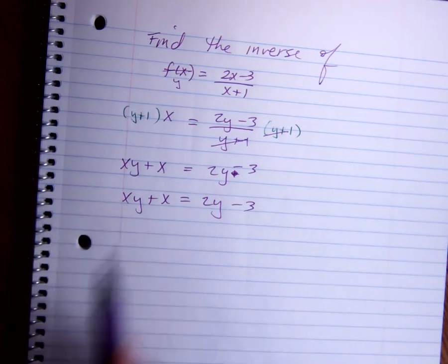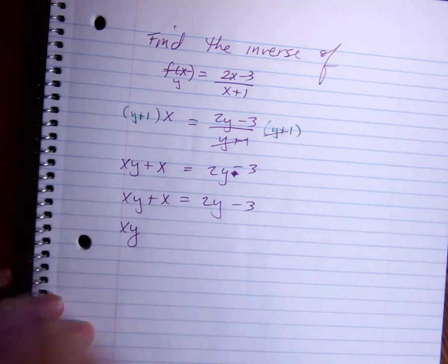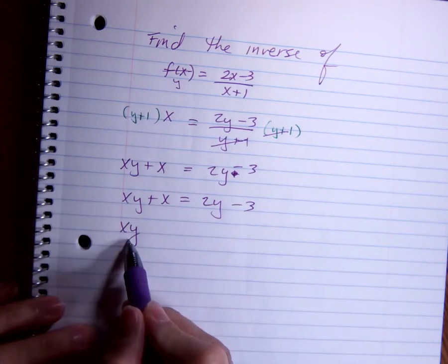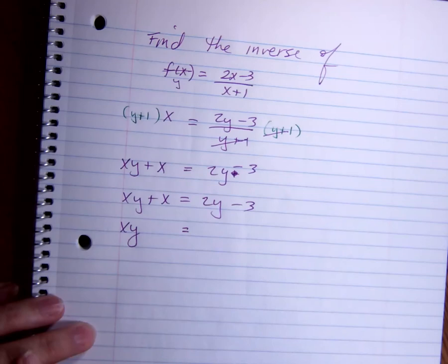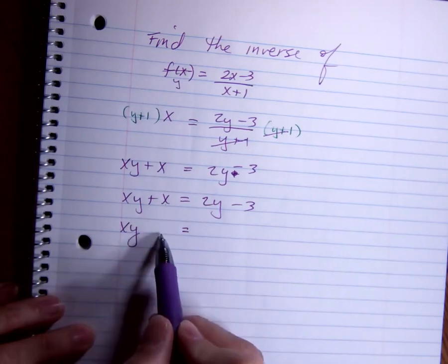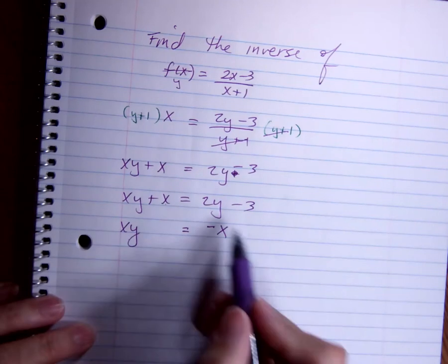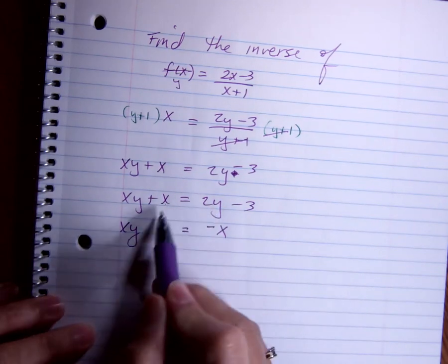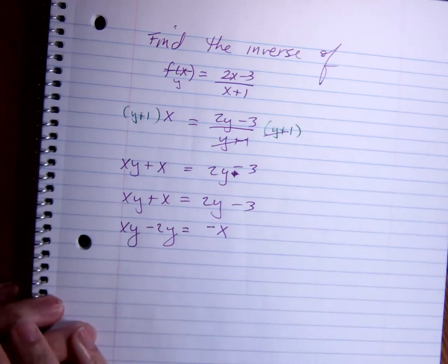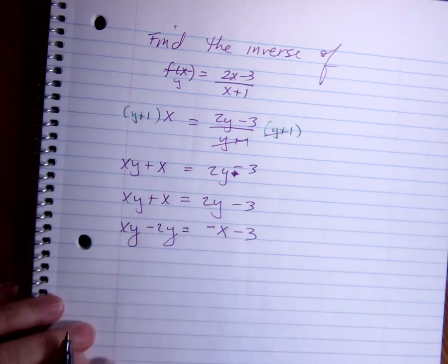It doesn't matter which side—I'll just pick this side. I'll keep my xy over here. This x doesn't have a y, so I'll move it over there. My 2y, I want it back on this side. And then I'll keep my -3.